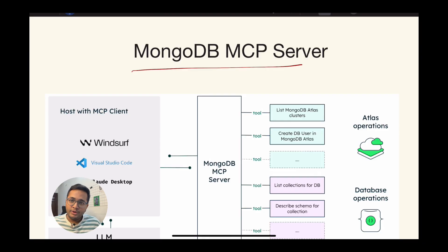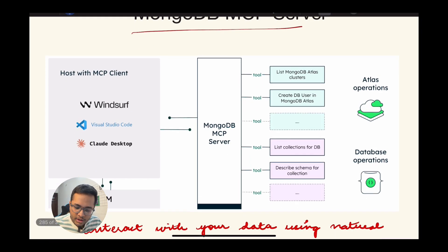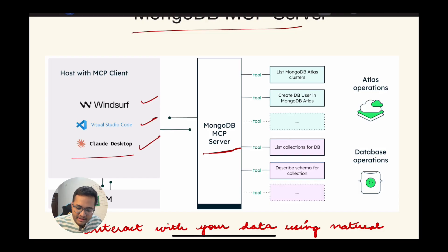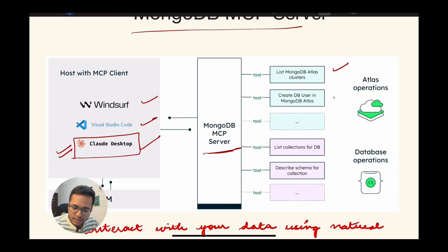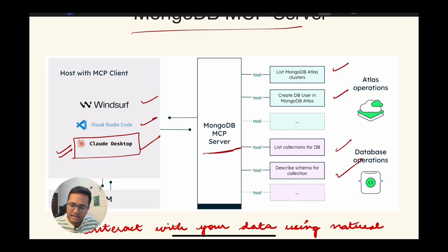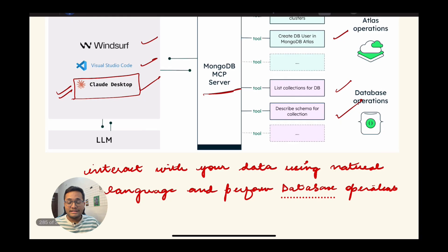MongoDB launched their MCP server earlier this year and it is now generally available for everyone this month. You can connect the MongoDB MCP server as the host with any MCP client like Windsurf, Visual Studio Code, or Claude Desktop. Today we'll use Claude Desktop. You can list MongoDB Atlas clusters, create a DB user in Atlas, list collections for a database, describe schema for a collection, and perform many other database operations.